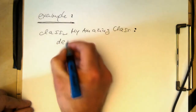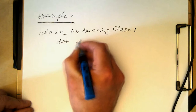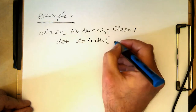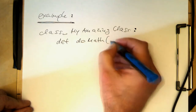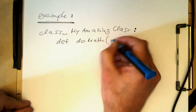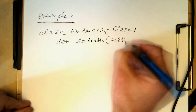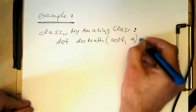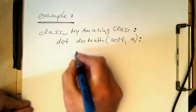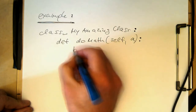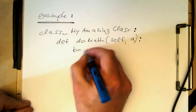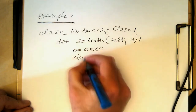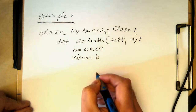Let's define a function like 'def do_math'. Now there's something special in Python here: the first argument in a function inside a class needs to always start with 'self'. After self, we can add our function arguments — let's call this 'a', and then the colon. Let's do some math: b equals a multiplied by 10, and then we return the result b.